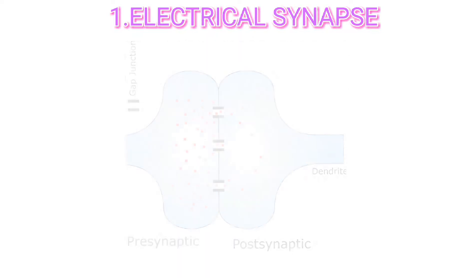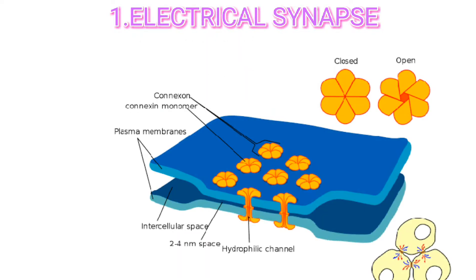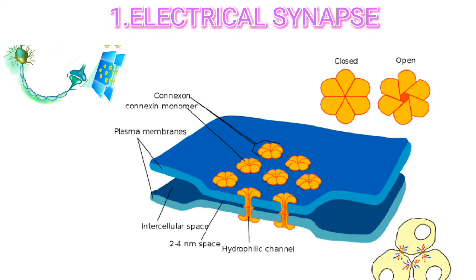Each gap junction contains 100 or so tubular connexons, which act like tunnels to connect the cytosol of two cells directly. As ions flow from one cell to the next through connexons, the action potential spreads from cell to cell.